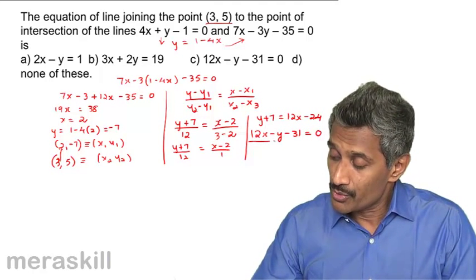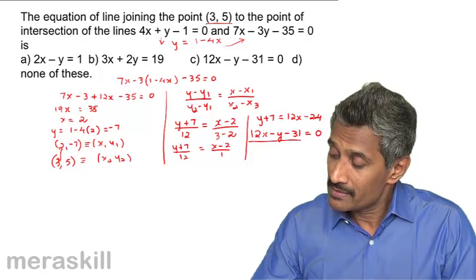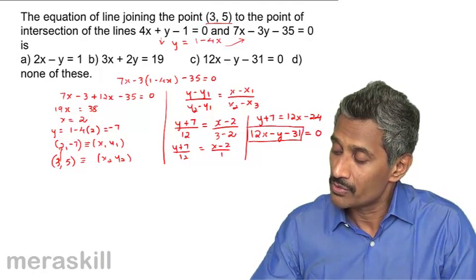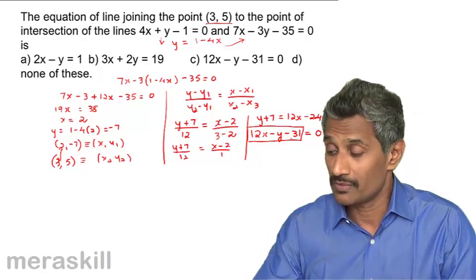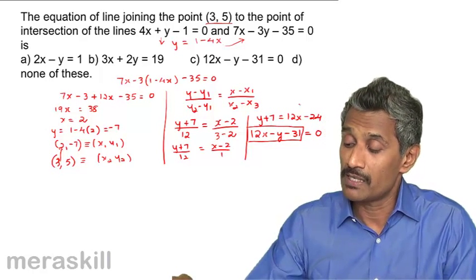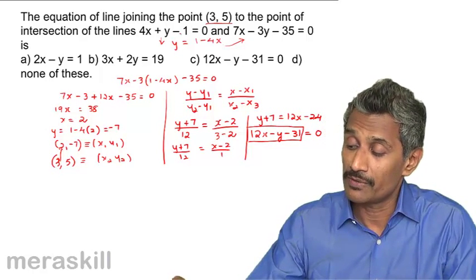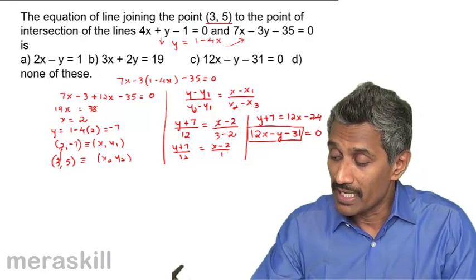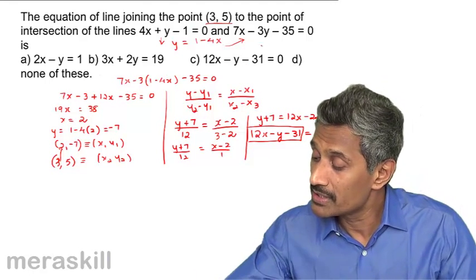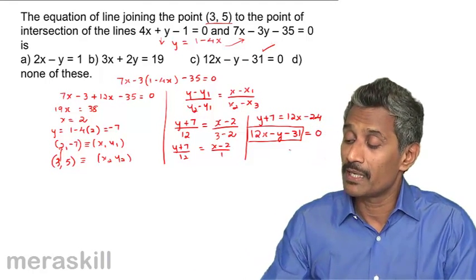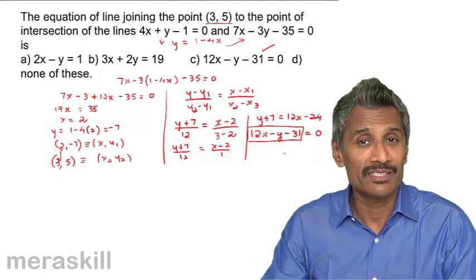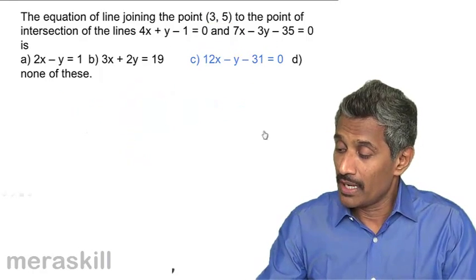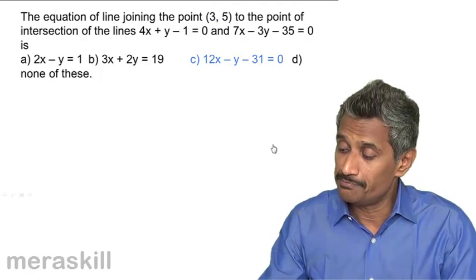The equation 12x minus y minus 31 equals 0 is the line passing through the point of intersection of the two given lines and the point 3 comma 5. Checking the options, the answer is 12x minus y minus 31 equals 0.